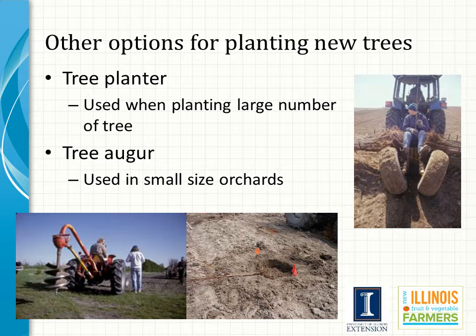Most large commercial growers utilize a tree planter. There are two major checkpoints in this system. First, make sure the union is set at the proper height, usually accomplished by having someone go behind the planter and pull up or push down the tree. Second, make sure the tree roots do not dry out — carry only enough trees so that when you plant the last tree, the roots still have some moisture.